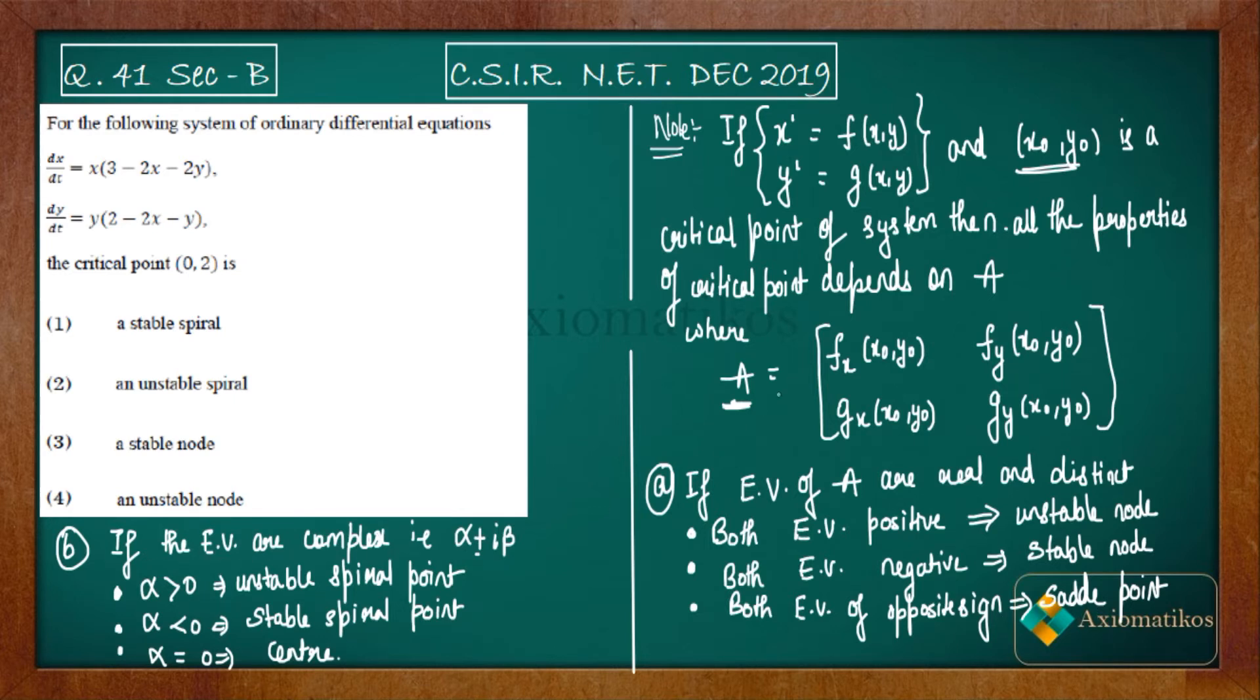If the eigenvalues of this matrix are in complex form, that is alpha plus minus iota beta: if alpha is greater than 0, unstable spiral point; if alpha is less than 0, stable spiral point; and if alpha is 0, then you will get your center.